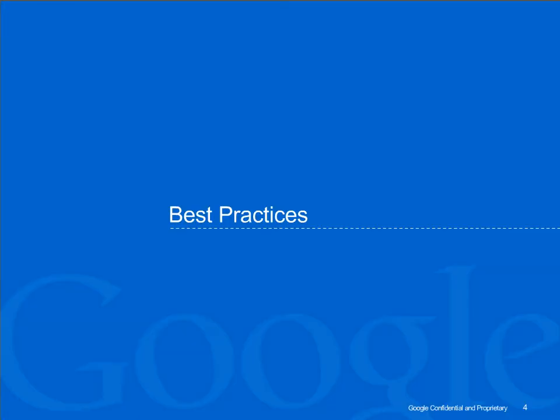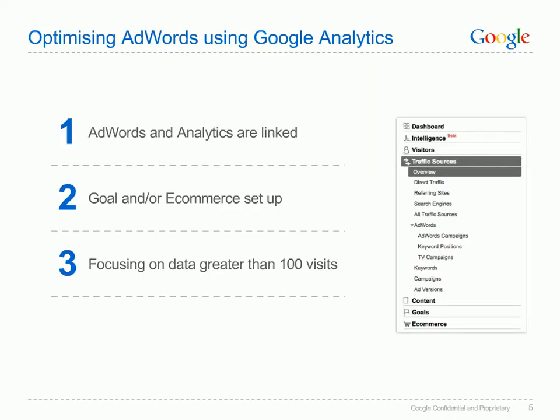Let's take a look at some quick techniques on how you can manipulate the AdWords reports within your analytics accounts and look at the actions which you can take from them. Before we delve into the AdWords reports there are a few best practice guidelines to cover. Firstly, ensure that your AdWords and analytics accounts are linked for accurate data. Secondly, ensure you have goals set up and if appropriate e-commerce tracking, to measure the success of your online advertising. Finally, as a rule of thumb, focus on data sets within the hundreds so as to dilute any anomalies.